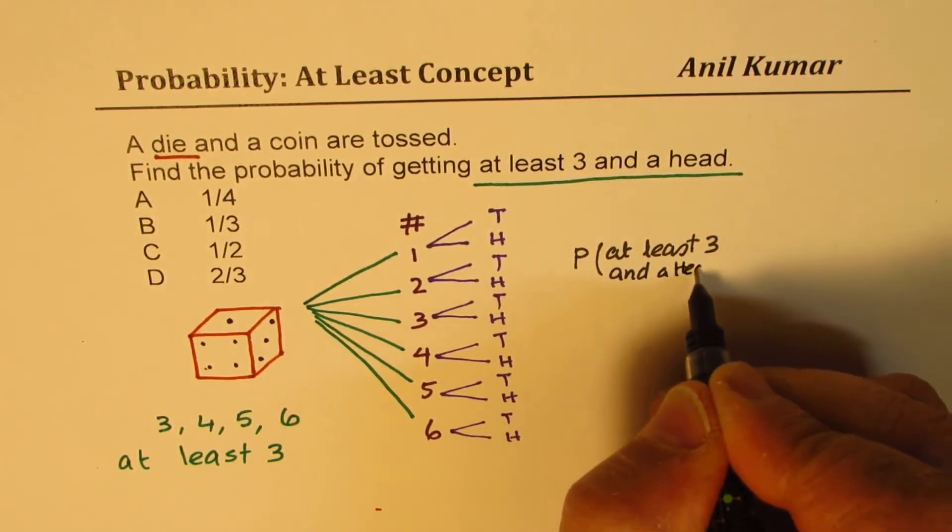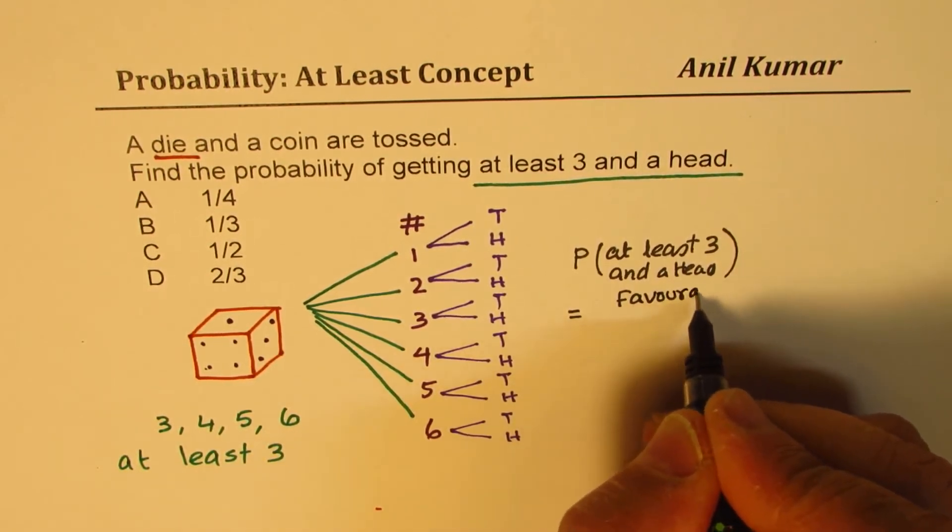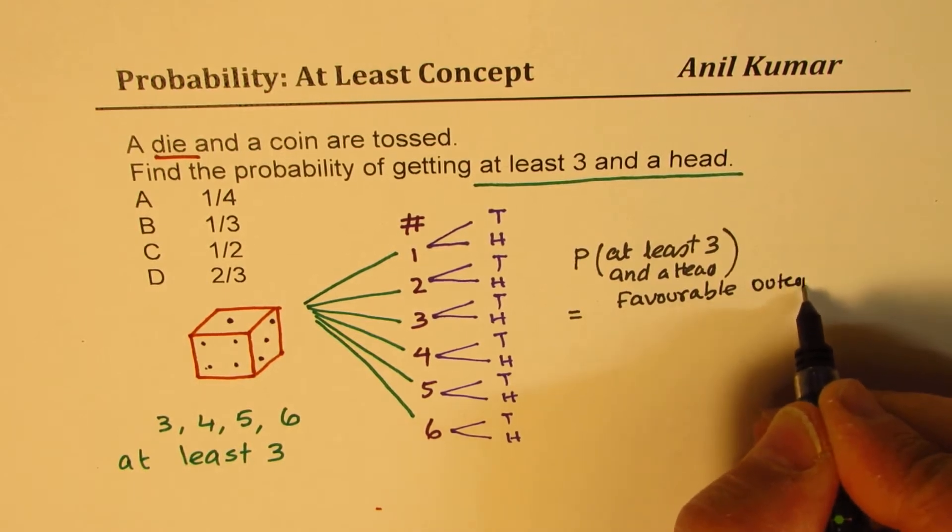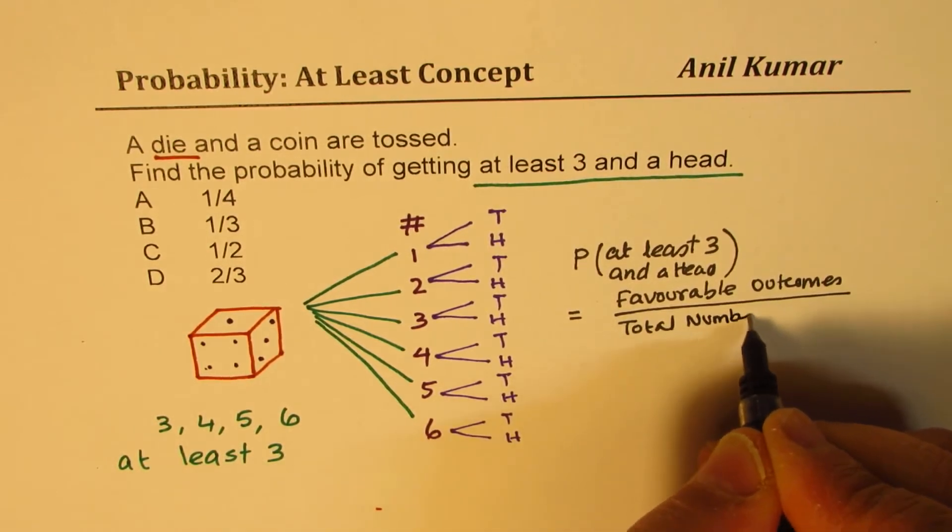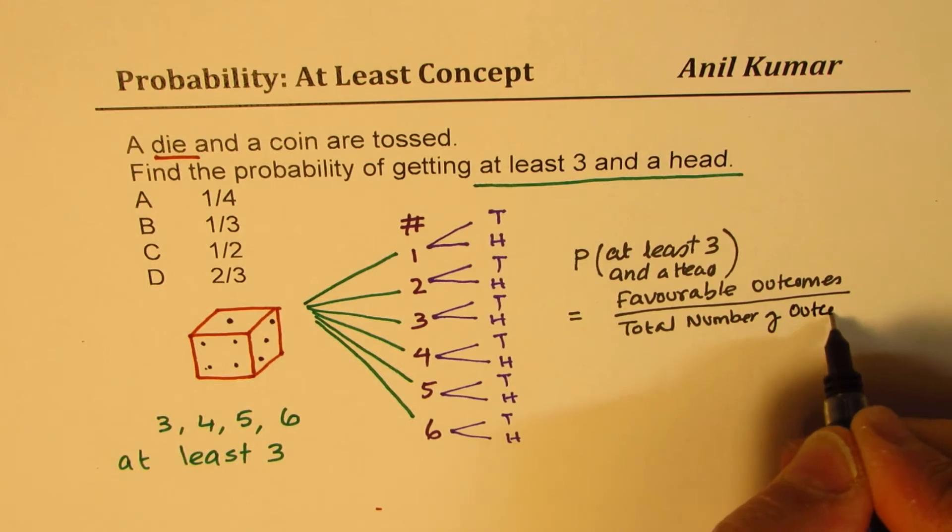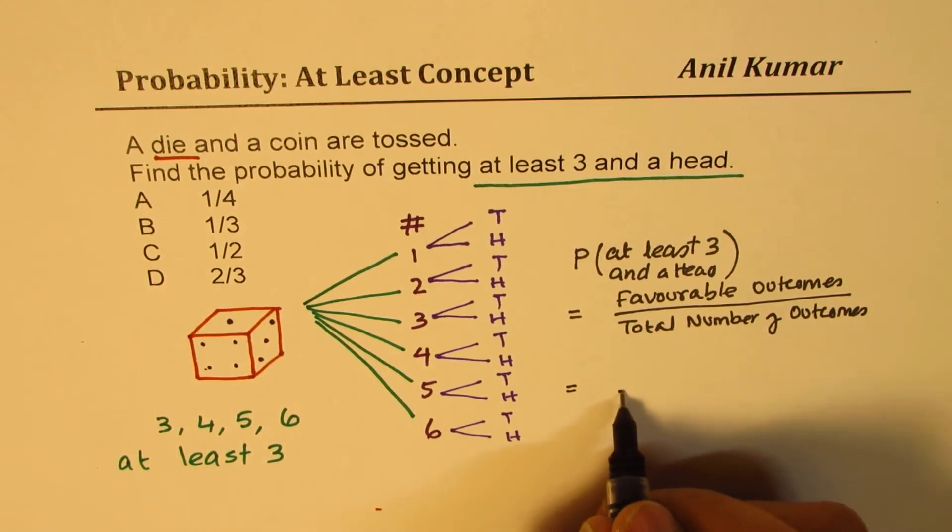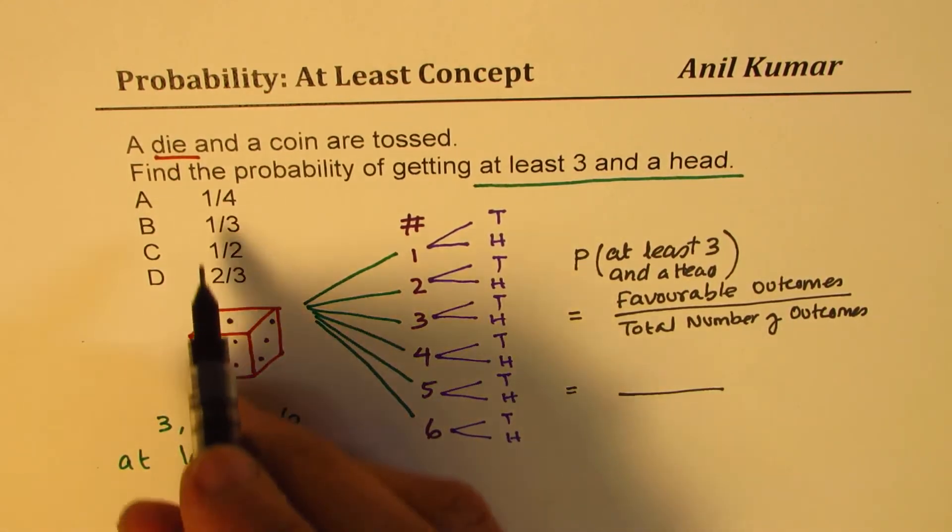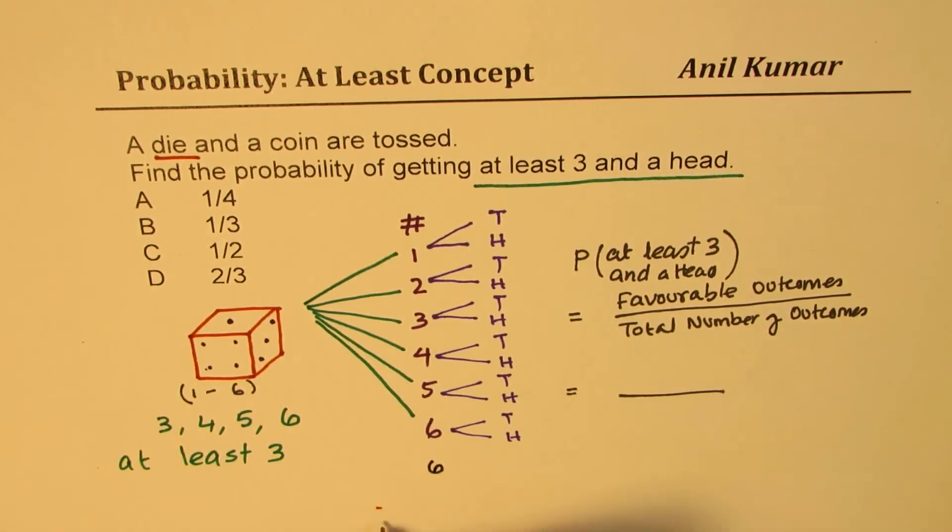When we say probability, we are talking about favorable outcomes over total outcomes. Total number here is six times two. Initially as far as dice is concerned, total outcomes are from one to six, so we have six possibilities, and here we have two. When you multiply six and two you get your total number of outcomes which is twelve.